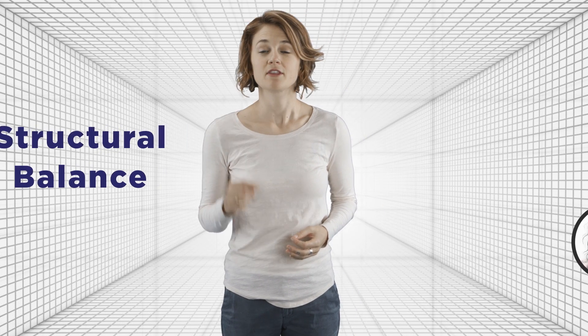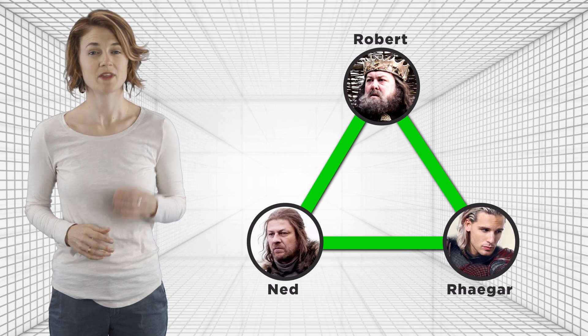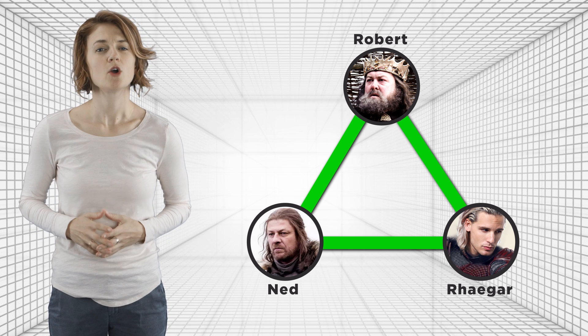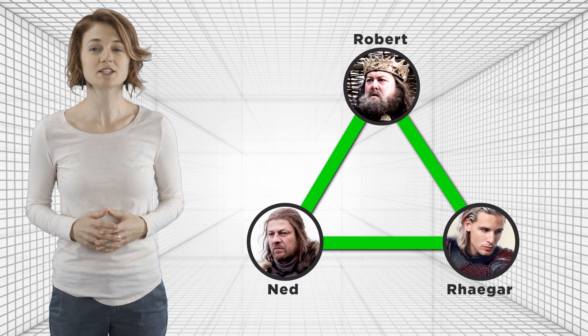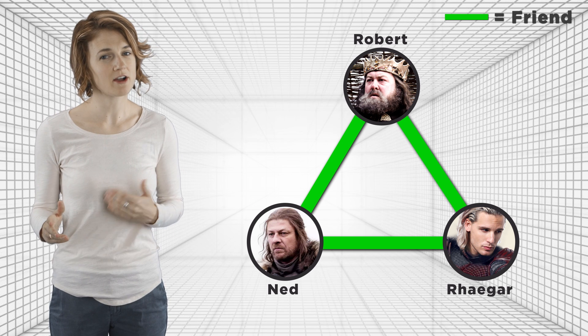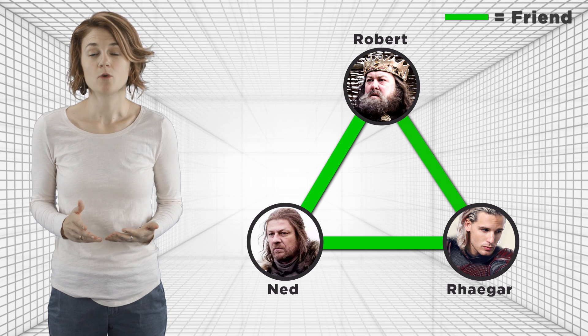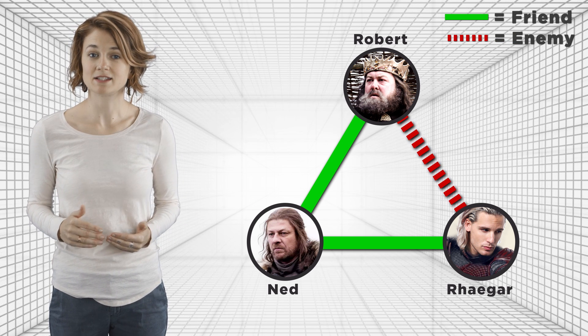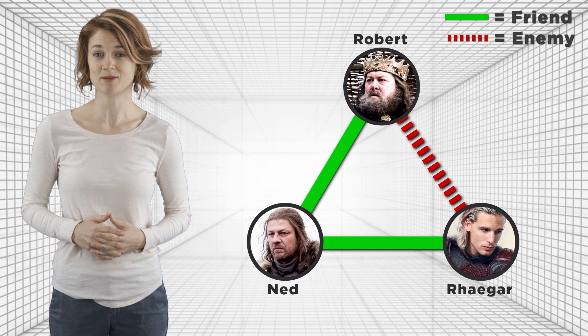For example, this graph shows three people—Ned, Robert, and Rhaegar—who are all friendly, symbolized by the green edges. But, if Rhaegar and Robert get into a fight, we can switch the edge to red to indicate their new status as enemies.